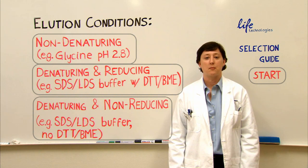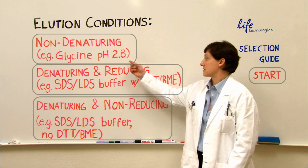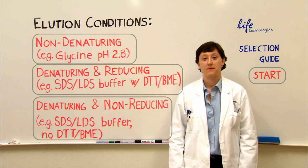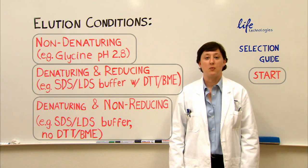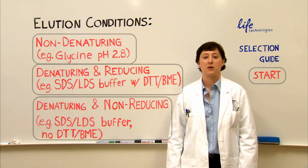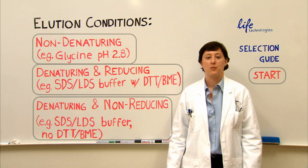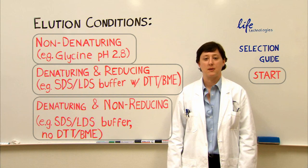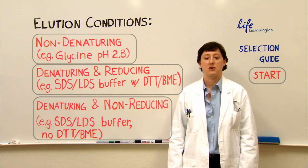If you would like to elute your protein under non-denaturing conditions then go ahead and click here. You should use this method if you want to study your protein or protein complex in its native state. For example, if you want to run a non-denaturing gel or you want to study protein function, protein-protein interactions or protein structure.